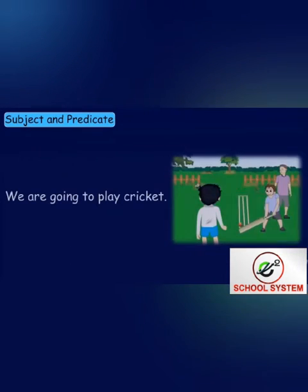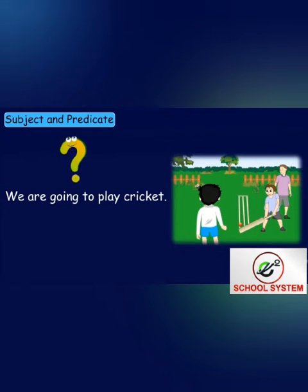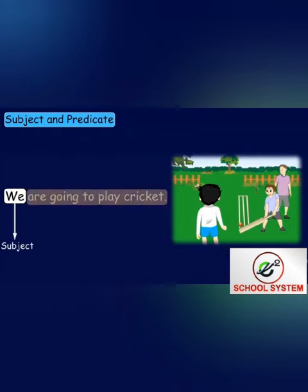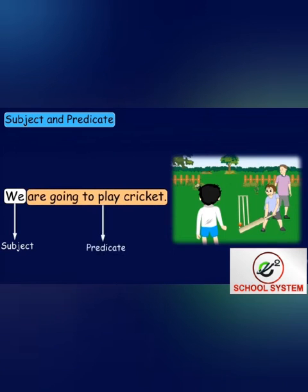We are going to play cricket. Who or what are we talking about? We — the kids are talking about themselves. So 'we' is the subject here, and the rest of the sentence is the predicate.